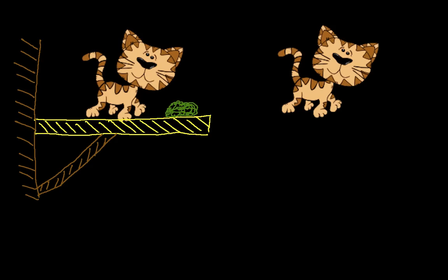Here we have a cat, and the cat is walking out on a beam towards that pile of green stuff. Let's assume that the pile of green stuff is catnip, which cats really like — it's almost like a drug to them. The beam is supported by a brace, and both the brace and the beam are attached to a wall. What we want to do in this example is draw a free body diagram of the cat.